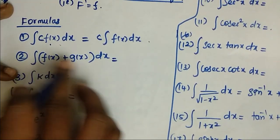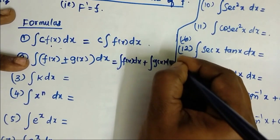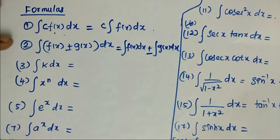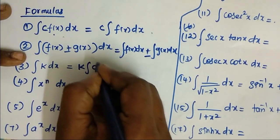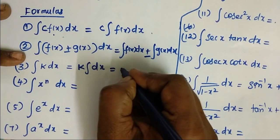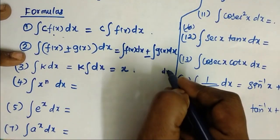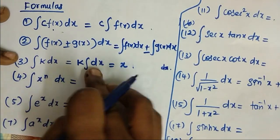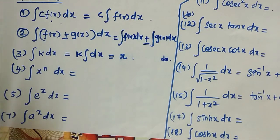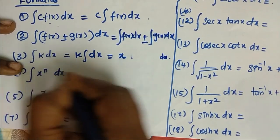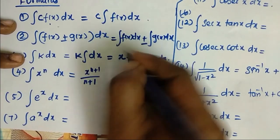The second property — the addition and addition function — we integrate the function. The second property is the same function. If we integrate the constant, we integrate the constant function. If we differentiate x^x, then we integrate x^x. We have a formula for this function.